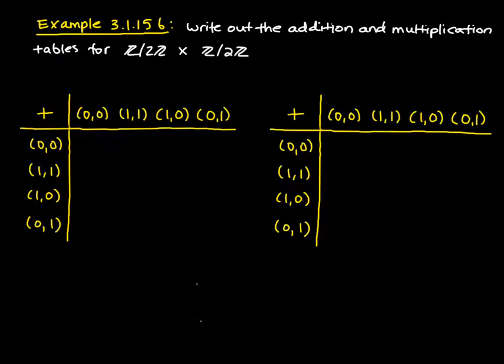So the first thing we're going to look at is addition. So we add component-wise. So this means that for (0,0) plus (0,0), I just get the following. Now (0,0) is the identity element, so I can actually fill in the first row and first column of this very quickly.